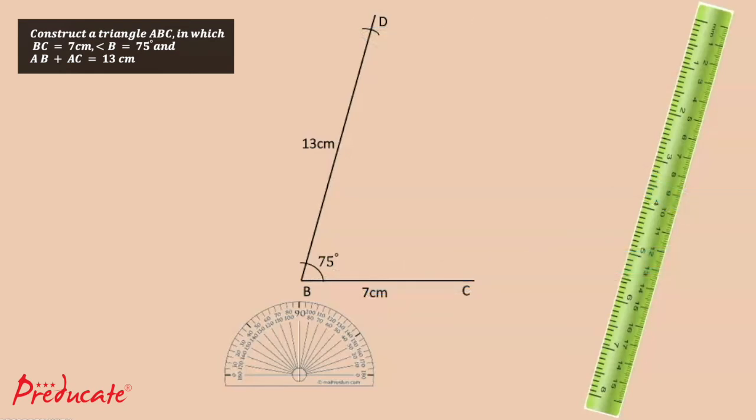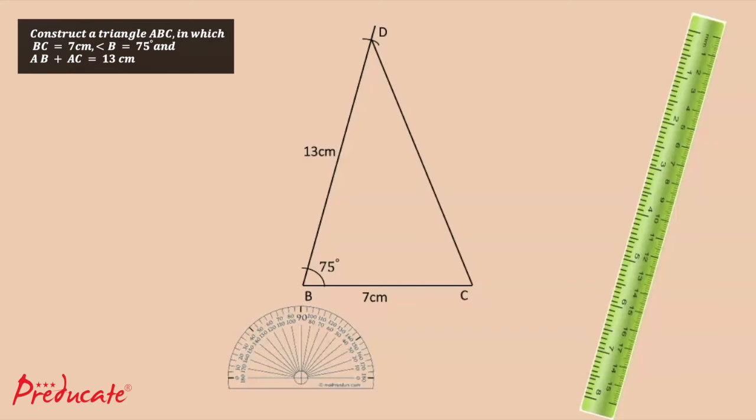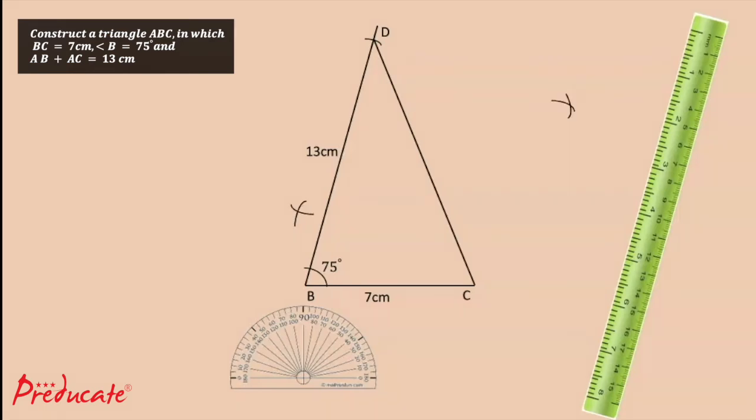And now join point C and point D. Next, draw a perpendicular bisector with the help of compass.